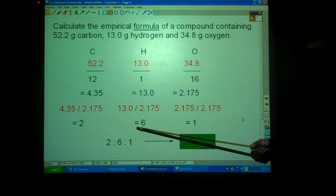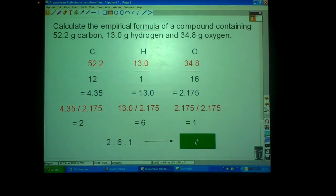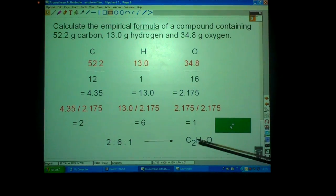So, we've got 2, 6 and 1 and we have to write it out properly to get the last mark. C2H6O1. You can write the 1 in, you won't lose the mark or you can leave it out.